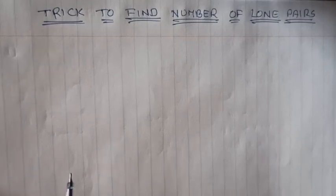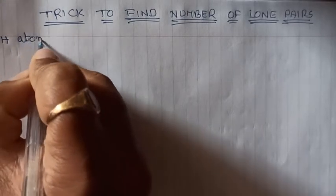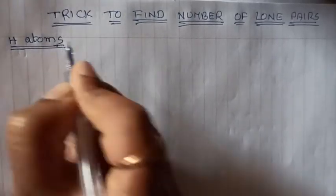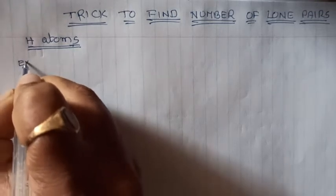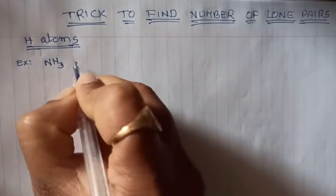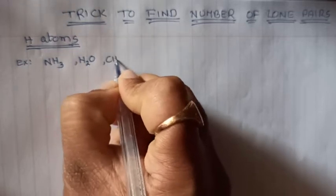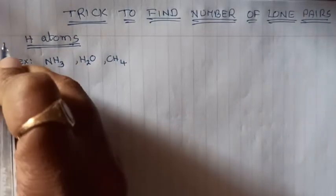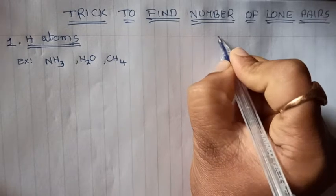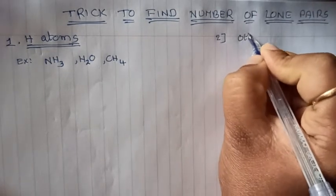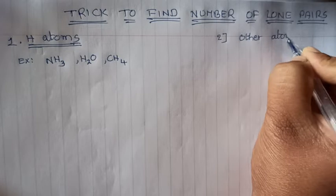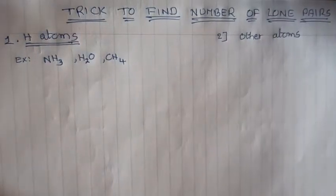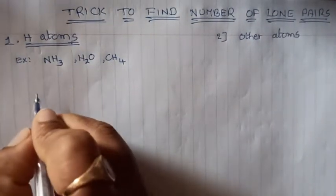Hi learners, welcome. In this video I'm going to explain a simple trick to find the number of lone pairs on the central atom. I'm going to take two cases: where the central atom is surrounded with only hydrogen atoms — like ammonia, water, and methane — and the second case is when the central atom is surrounded by atoms other than hydrogen.